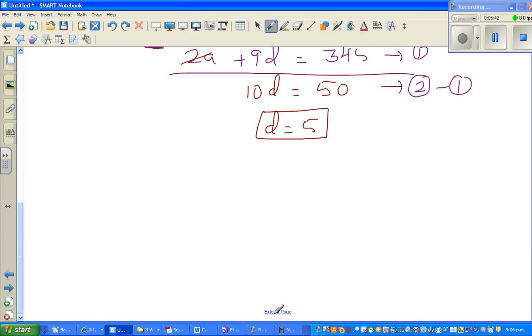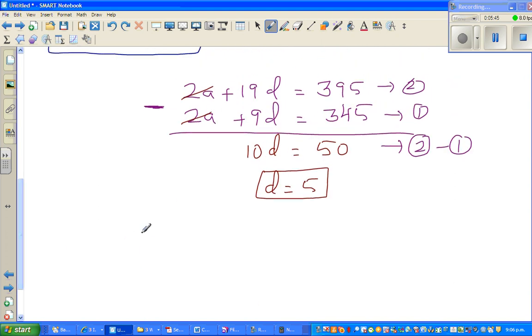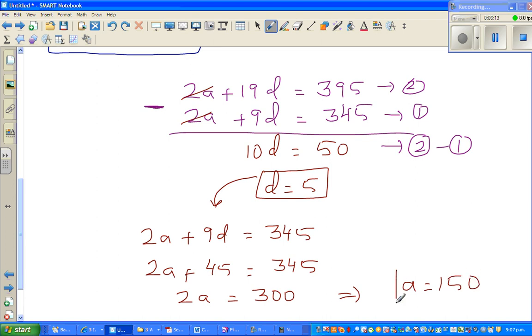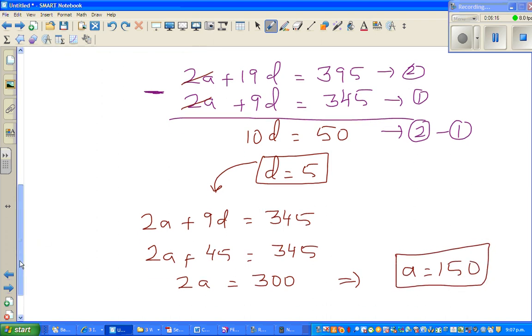Now we need to find a. Let me write the smaller equation: 2a plus 9d equals 345. I'm going to substitute d equals 5 back into this equation, so 2a plus 9 times 5, which is 45, equals 345. If you take away 45 from both sides, 2a equals 300, which implies a is 150.